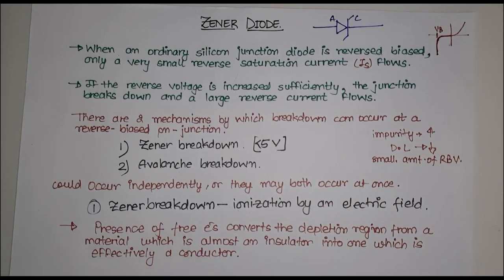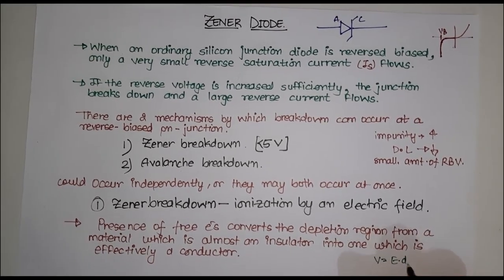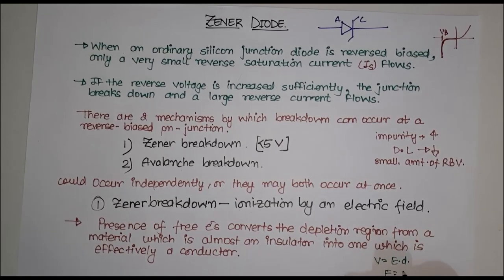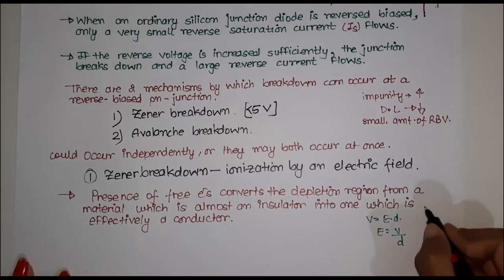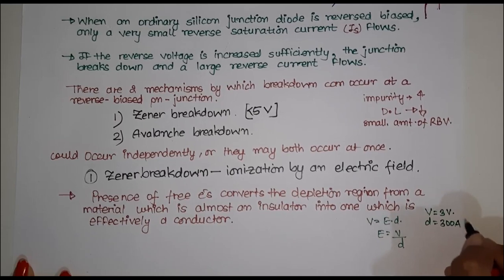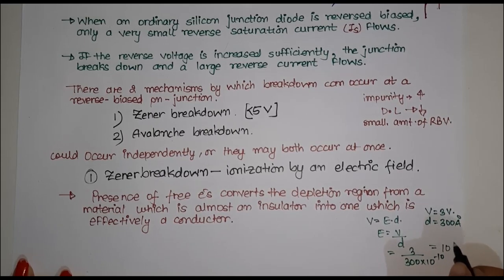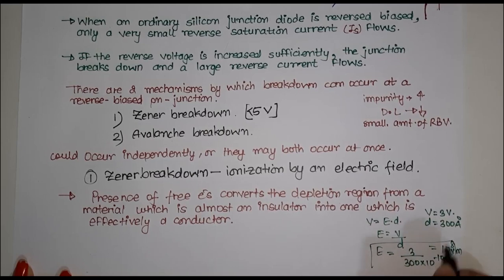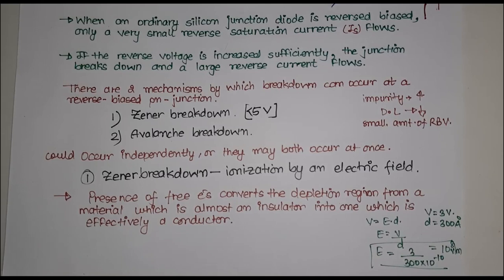As the electric field increases, we know that voltage equals E into d, so the electric field formula becomes V by d. Let us assume that the voltage is 3 volts and the distance is 300 angstroms — that is 10 raised to minus 10 meters. So when we divide, this comes out to be 10 raised to 8 volts per meter.